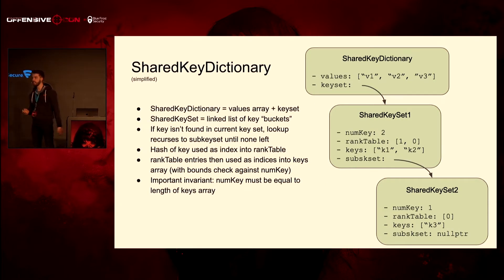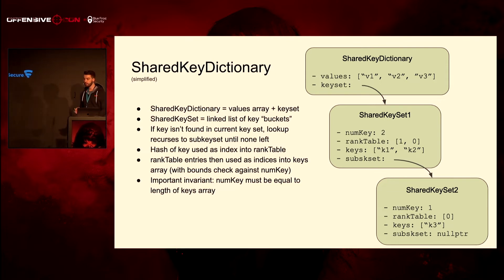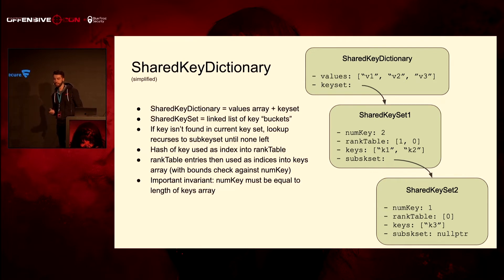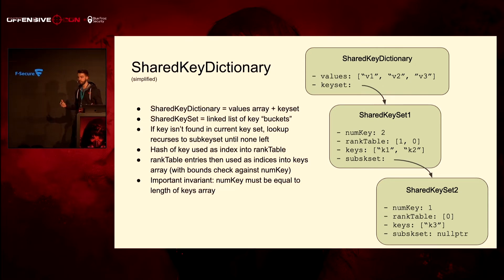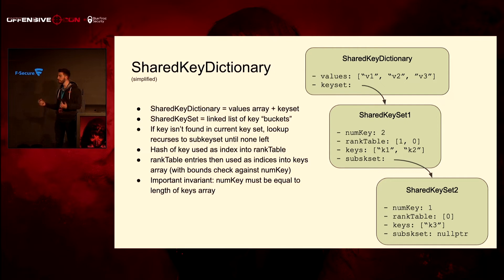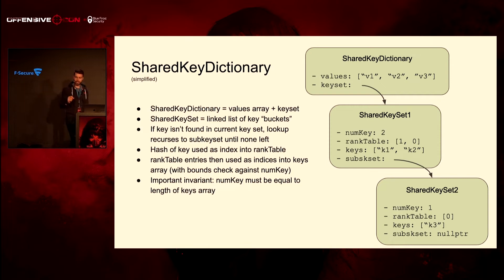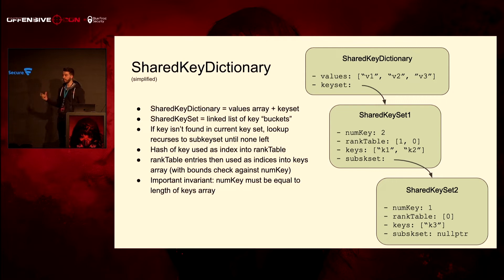I want to spend two minutes explaining this vulnerability. It's a cycle issue during NS unarchiving, again in the shared key dictionary. There's a shared key dictionary — at the top right you can see it. It's basically an area of values and a pointer to a shared key set. A shared key set itself is a linked list, so they can have sub-key sets. They have the number of keys they store, then a rank table, and then the area of keys.